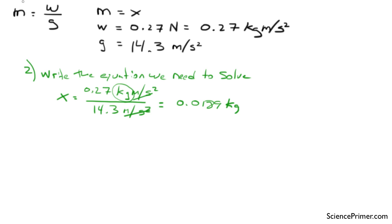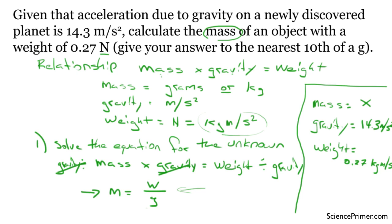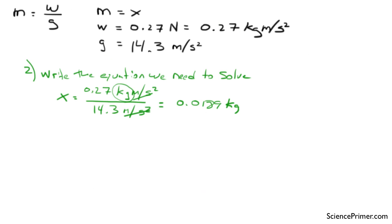But if you remember, the problem asks us to provide the answer to the nearest tenth of a gram. So we have kilograms, we want grams, so a final step is to convert to proper units. So if we have 0.0189 kilograms, we know that it's 1,000 grams per kilogram. If kilograms cancel, we'll end up with grams as the unit and the answer will be 18.9 grams. So this is the answer we would put into the website.